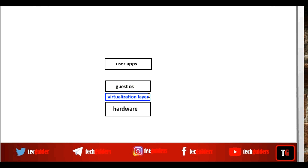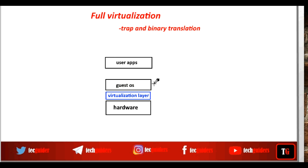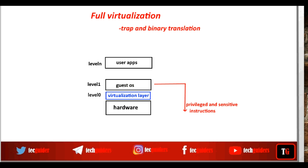Based on how this situation is handled, there are two kinds of virtualization: full virtualization and para-virtualization. One approach used for full virtualization is the trap and binary translation approach. Here, we keep the virtualization layer at the highest privilege level and the guest operating system is placed at a comparatively low privilege level but a higher level compared to the user application's privilege level. If the guest operating system tries to issue some privileged and sensitive instruction, it will create a trap to the virtualization layer and the virtualization layer translates these instructions to another sequence of instructions and issues it to the hardware. Overall, it emulates or creates the same behavior which the guest operating system expects when it runs on the bare hardware directly.